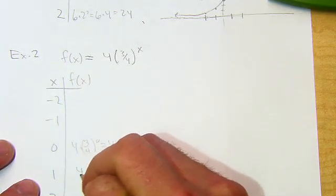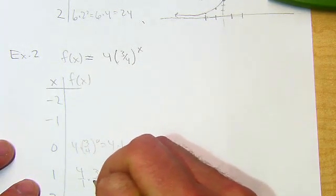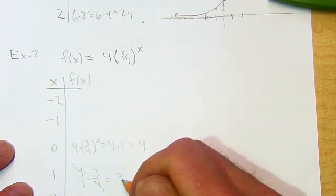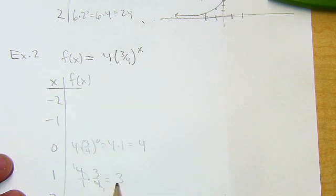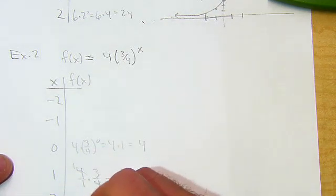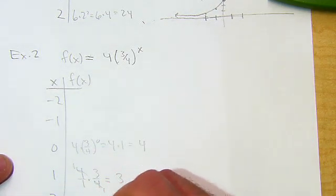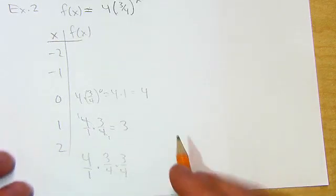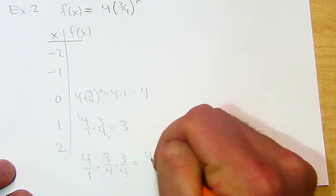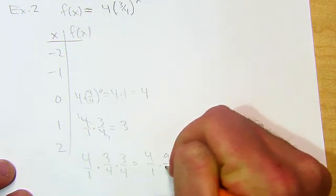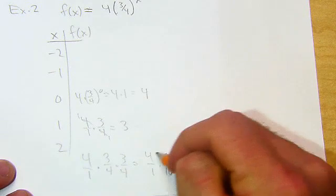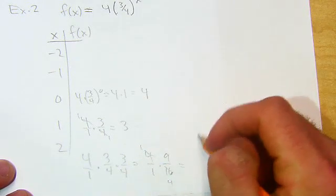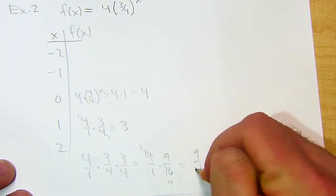Then let's go up here. 4 over 1 times 3 over 4. For this one, it's actually just 3, if you think about canceling there. And then 4 over 1 times 3 fourths squared. Remember, that means do this: 3 fourths times 3 fourths. 4 over 1 times 9 sixteenths. This also cancels. So we're talking 9 over 4.